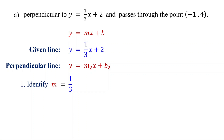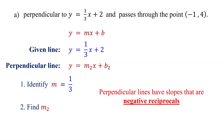The next step is to find the slope of the perpendicular line. Perpendicular lines always have slopes that are negative reciprocals of each other. This means to find the slope of the perpendicular line, we take the reciprocal of the slope of the given line and then change the sign. The slope of the given line is one-third. To find its reciprocal, just flip it. Then change the sign of the reciprocal. This equals negative 3. Therefore, the slope of the perpendicular line is negative 3.